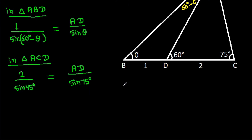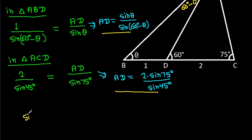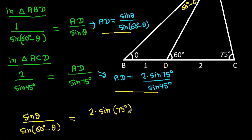From the second equation, we can get AD equals 2 times sin 75 degrees over sin 45 degrees. So from these two equations, we can say that sin theta over sin(60 degrees minus theta) equals 2 times sin 75 degrees over sin 45 degrees.